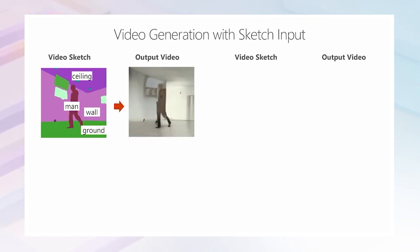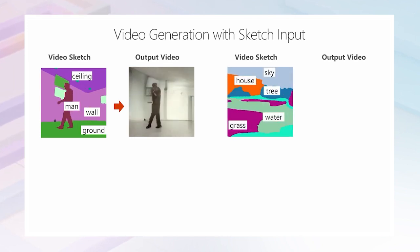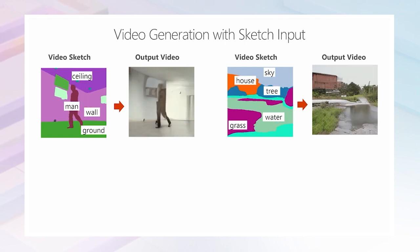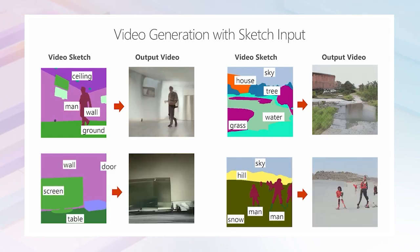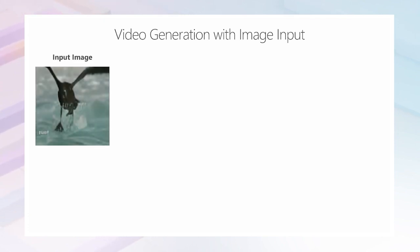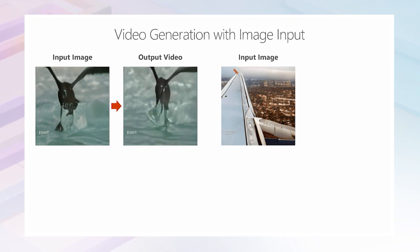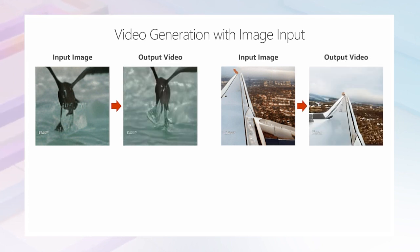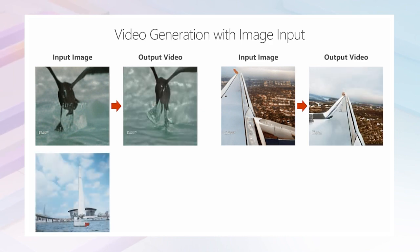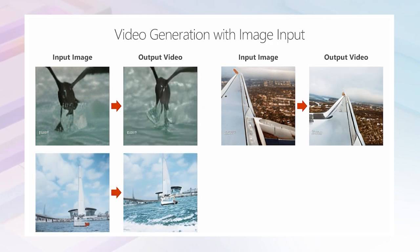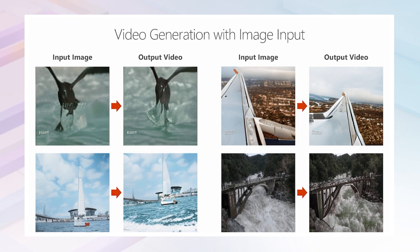Let's try something interesting. What if you have an image and want to predict the video of the future? For example, let's give Nuwa a hawk on the sea — the hawk catches some fish. If you are taking a plane and see out the window, the camera is moving. How about a sailing boat on a calm lake? It turns out to be choppy. And the final sample shows how water cascades down.